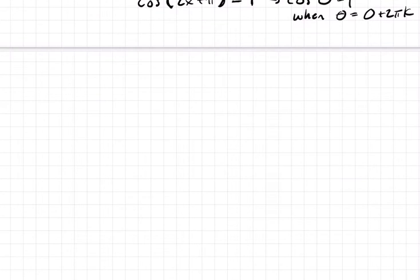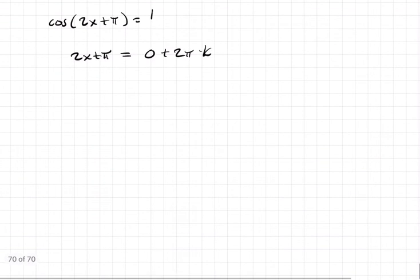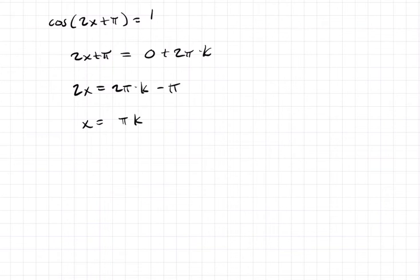All right, so what does that mean? Well, we said the cosine of 2x plus pi has to equal 0. That means 2x plus pi, which is our theta, that has to equal 0 plus 2 pi k. And sorry, this said not 0, but 1. And now we want to solve for x. So 2x is going to equal 2 pi times k minus pi.